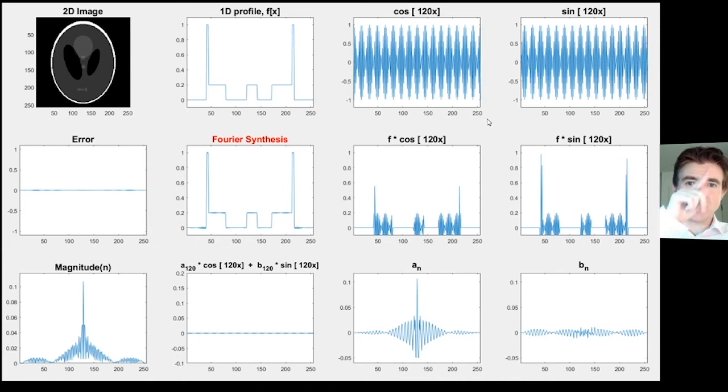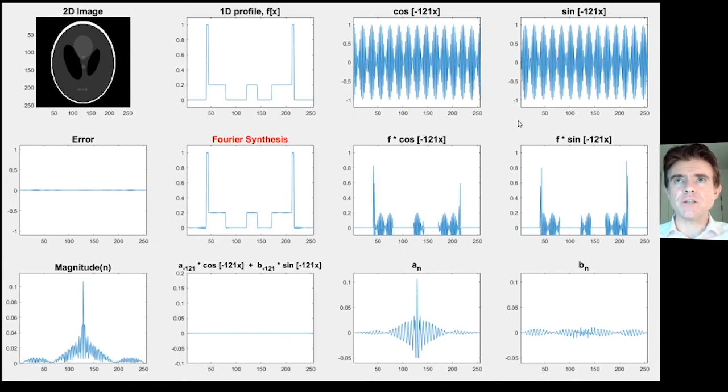To accommodate an up then down of a cosine, we can only fit in 128 such functions, because we need one pixel for going up, one pixel for going down. Therefore, 128 times 2 gives us 256. That's known as the Nyquist frequency, the highest frequency that we can represent on a grid like this. We're nearly there now.